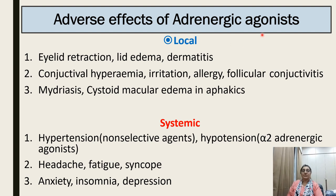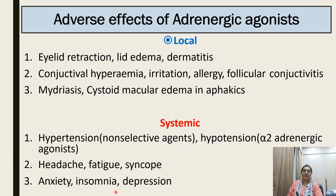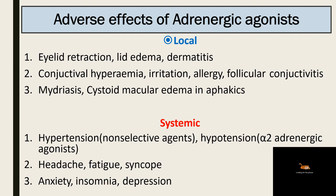Local adverse effects of adrenergic agonists include eyelid retraction, lid edema, dermatitis, conjunctival hyperemia, irritation, allergy, follicular conjunctivitis, mydriasis, and cystoid macular edema in the affected eye. Systemic adverse effects include hypertension due to vasoconstriction and increased peripheral resistance with non-selective agents; hypotension with alpha-2 adrenergic agonists; headache, fatigue, syncope, anxiety, insomnia, and depression due to systemic absorption.